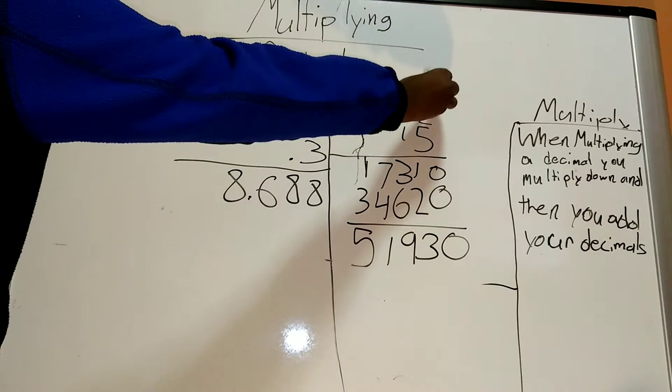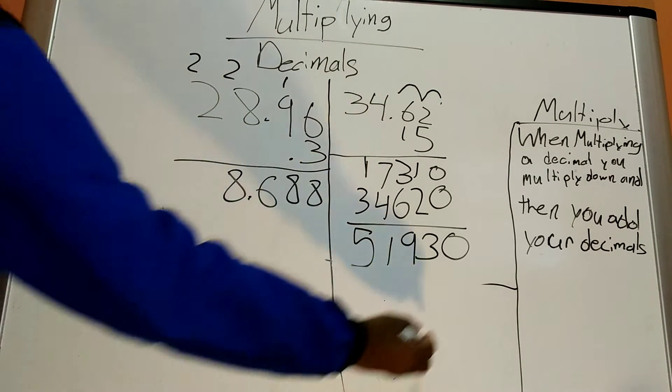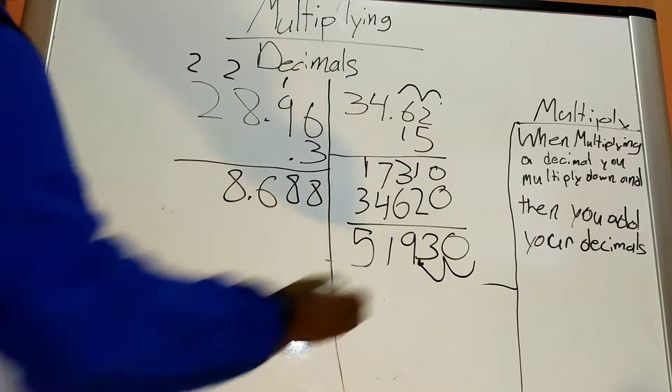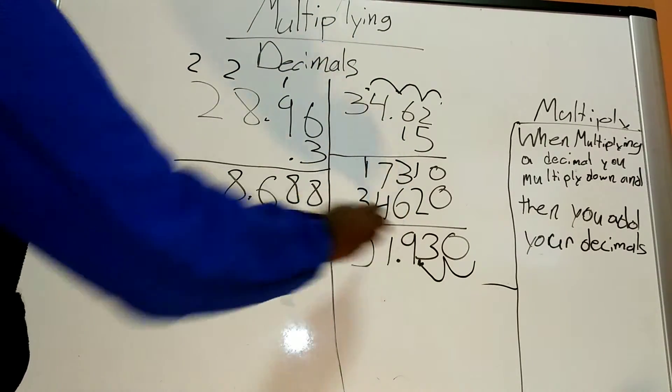So, it's 1, 2 places away. So then all you have to do is skip 1, 2, and that's where your decimal would be. If the decimal is like right here, then you have to do one more, and then this would be right there.